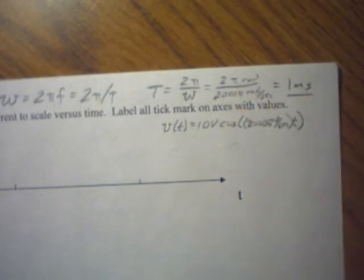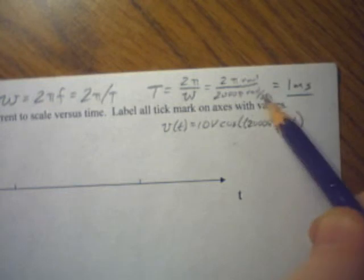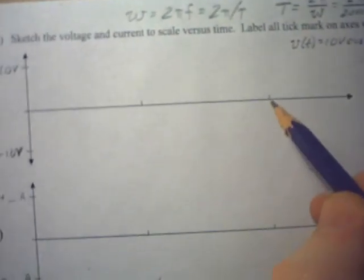That gives us 1 millisecond. Pi is cancelled out, 2 is cancelled out. We get 1 over 1,000. And then we have, look at this, the units here comes out in seconds, 1 millisecond. That makes it easy to label this.